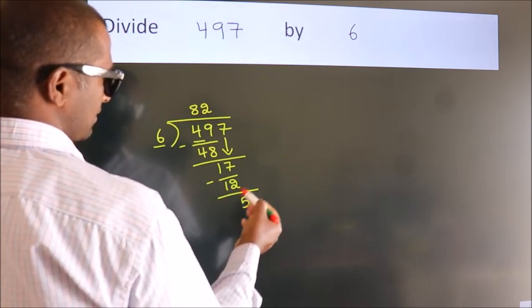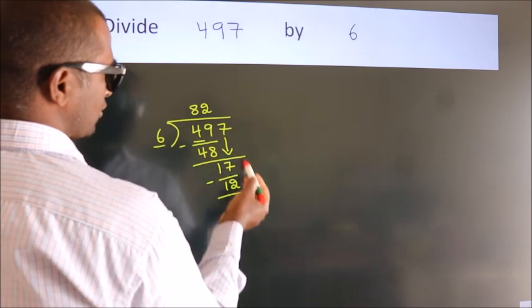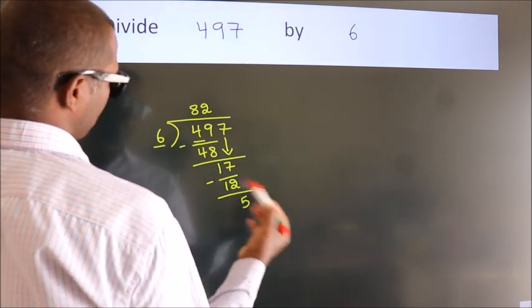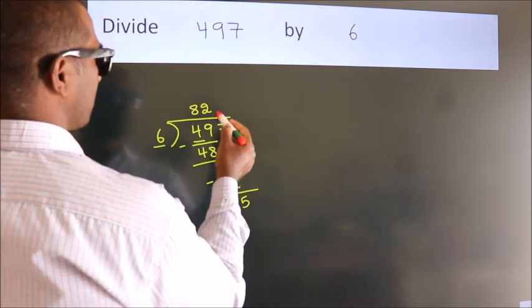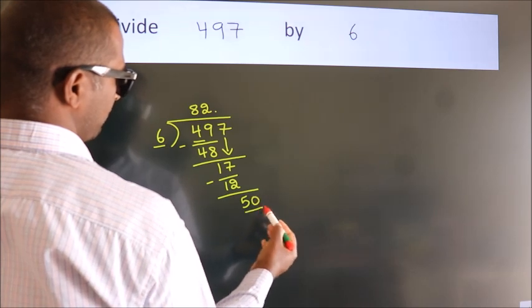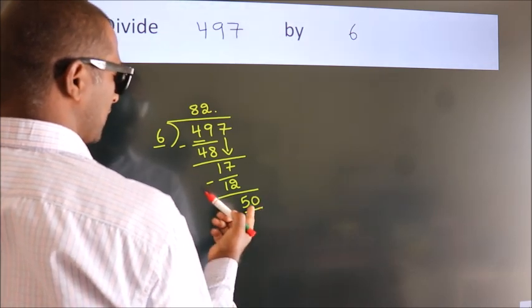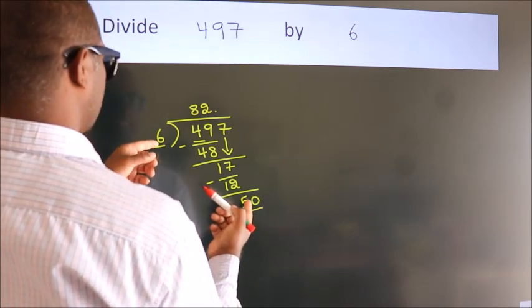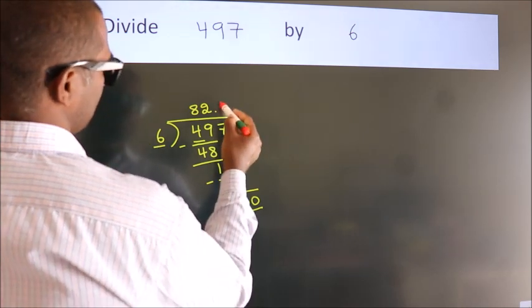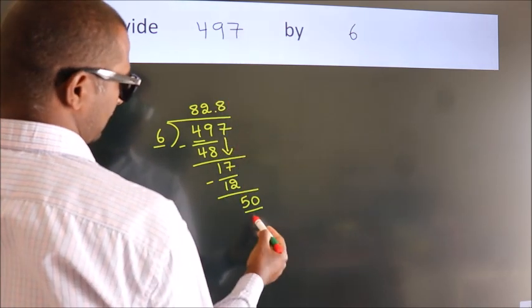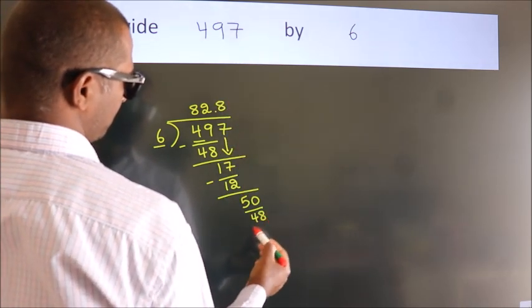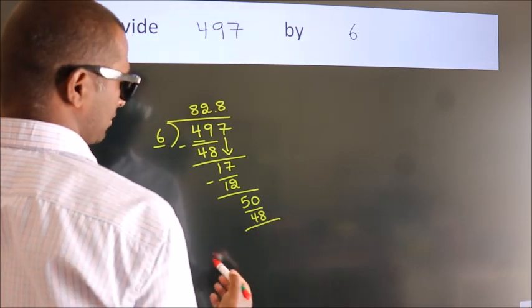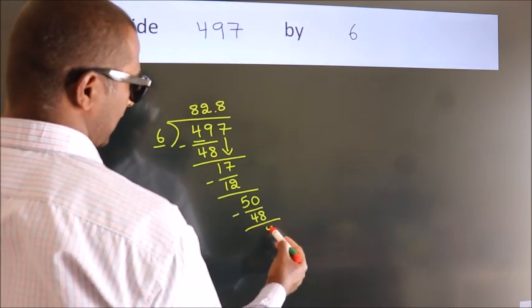After this, no more numbers to bring down. So what we do is, we put a dot and take 0. So 50. A number close to 50 in the 6 table is 6 times 8 is 48. Now we subtract. We get 2.